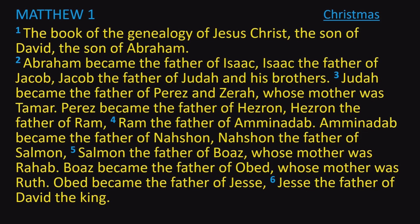In verse 2, the detailed genealogy starts with Abraham, the father of Isaac, and so on. It gets down to verse 6 where it says Jesse, the father of David the king. So here is where David fits into Jesus' genealogy.